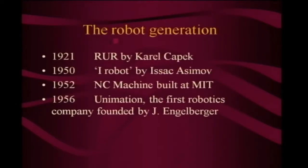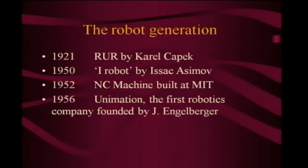Then we start on what is called the robot generation. In 1921, you had the book R.U.R. — Rossum's Universal Robots by Karel Čapek. It is a story in which the robots kill everybody. Then in the 1950s, Asimov wrote iRobot. The important part is it had the three laws of robotics: the robot will not harm human beings, will not harm itself, and will carry out the task — theoretically putting together a machine which is safe.